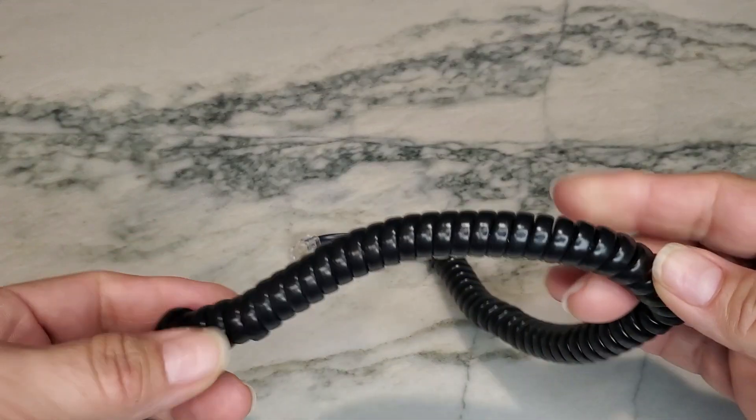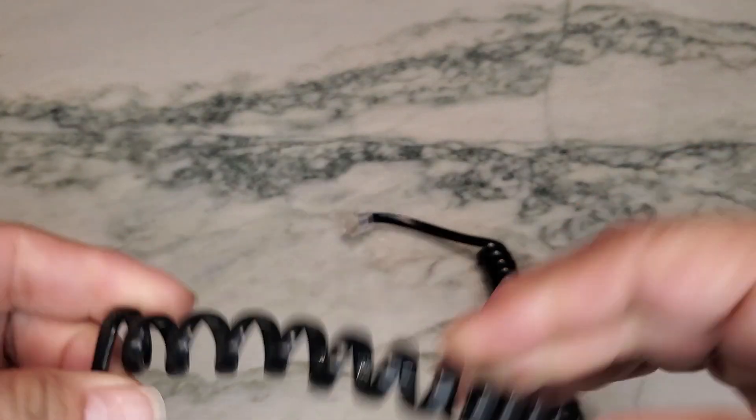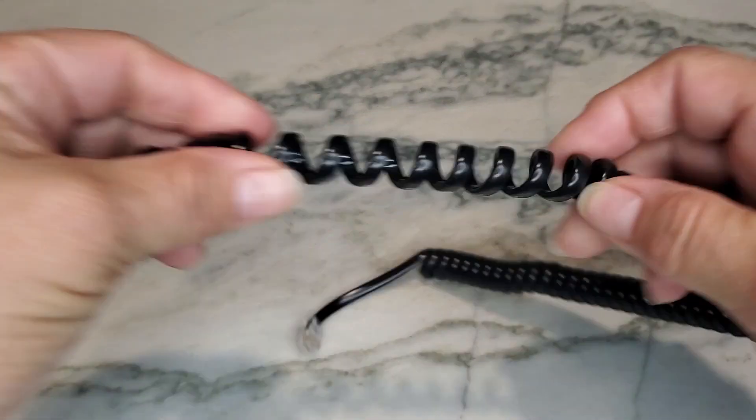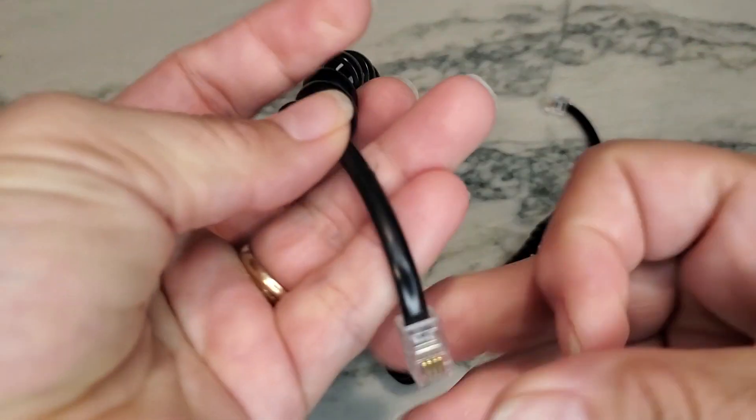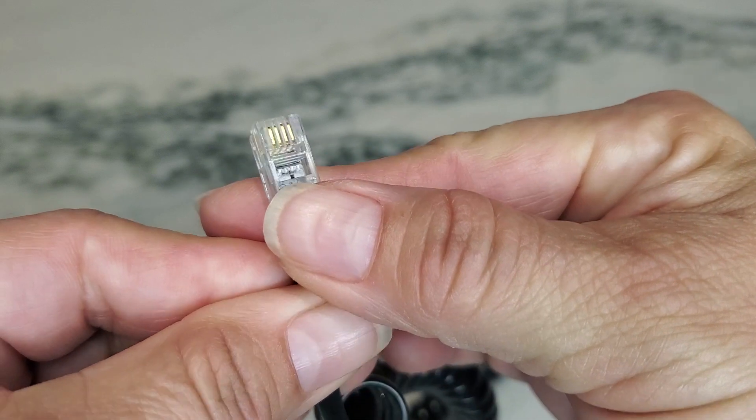This telephone cord stretches up to six feet long. Currently it's only one foot when coiled up, but when you stretch it out it extends to six feet. It has a copper line on the inside, as you can see there.